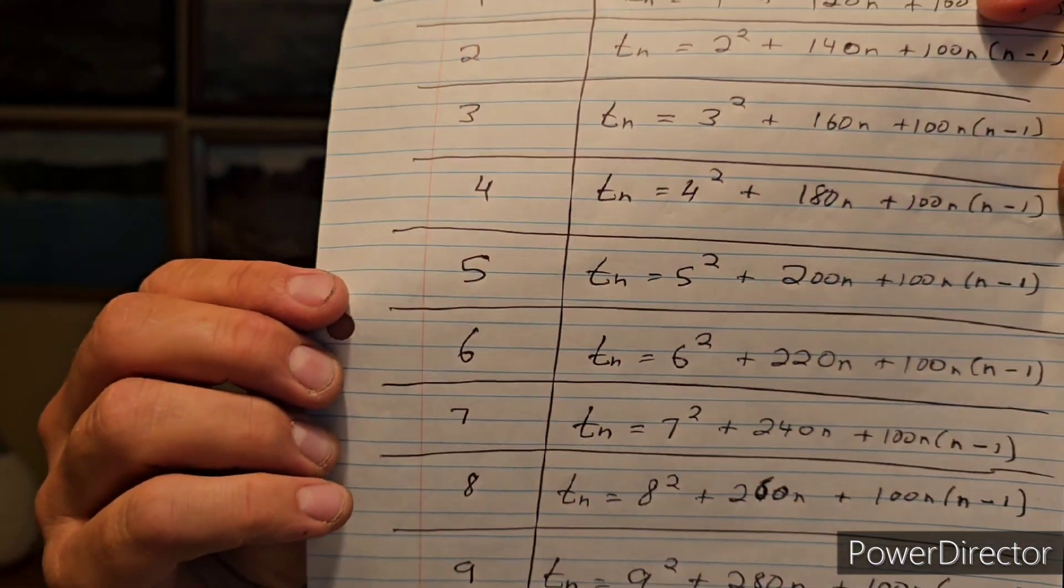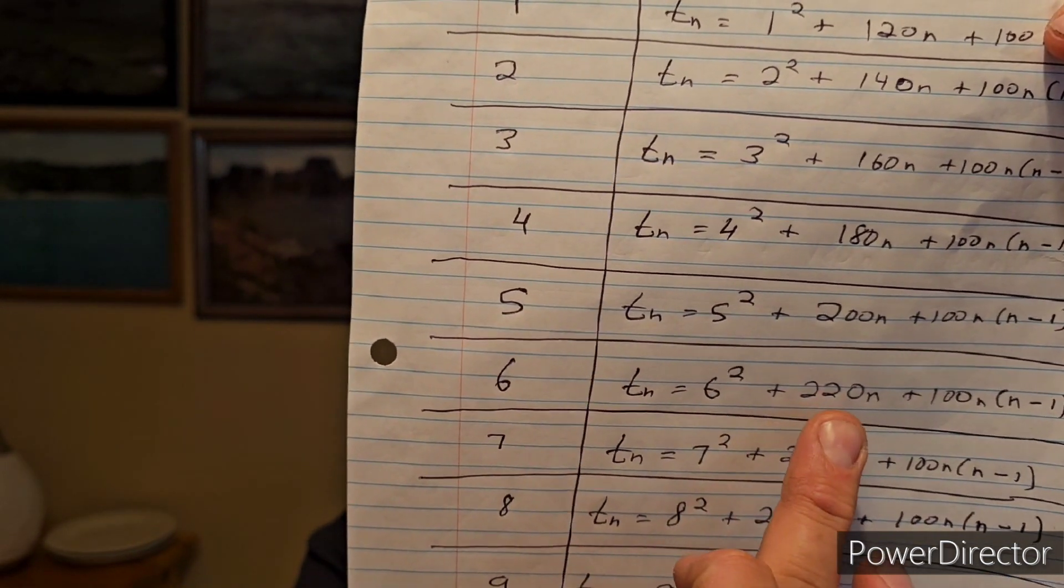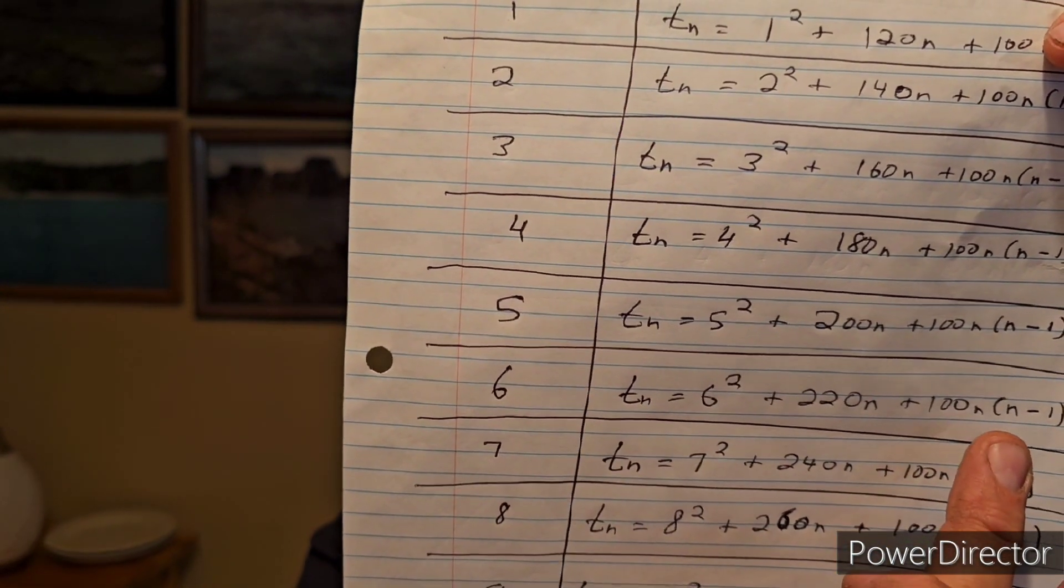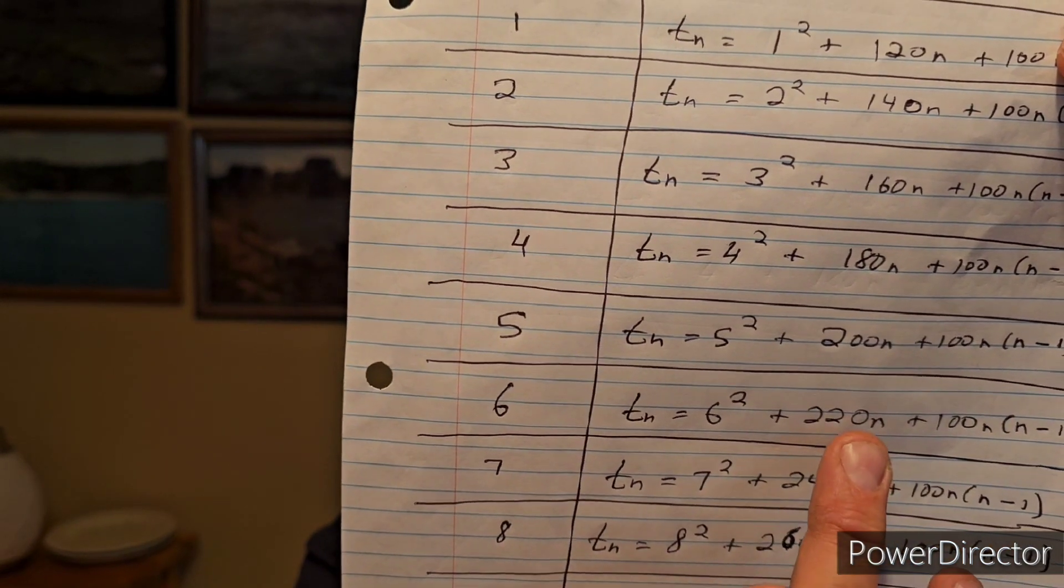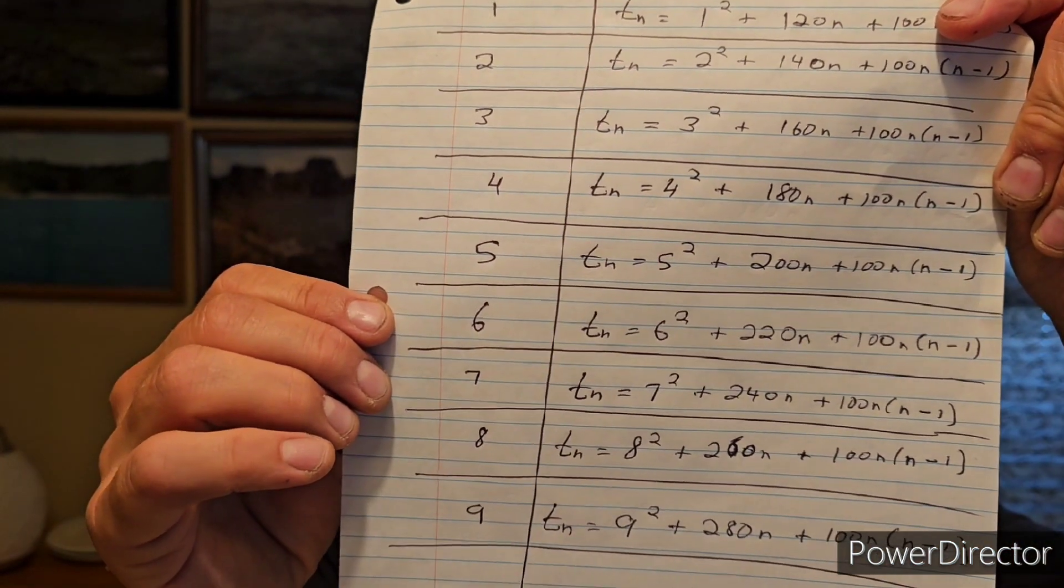Let's do a number ending in 6. Let's do 66. Well, if it's 66, that means it would be T6 with 6. So it would be 36 plus 1320 plus 3000. So 3000 plus 1320 is 4320 plus 36. That is 4356. And yes, that is 66 squared.